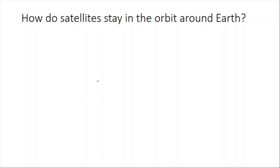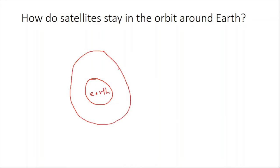How do satellites stay in orbit? When a satellite is sent to orbit it is given an initial velocity, and there is a gravitational force between the earth and the satellite. If the satellite were stationary, gravity would pull it to earth. But since it moves in a circular path, the gravitational force is always perpendicular to the velocity, continuously changing its direction, so the satellite revolves around the earth in a circular orbit.